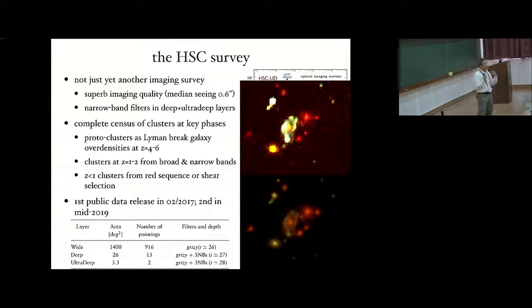So because of all these aspects, we can conduct complete census of clusters at the key phases of their lives, including their infancy, the proto-clusters at redshift 4 to 6, using the Lyman break technique. As well as the forming phase, at redshift 1 to 2, we can use the broad and narrow band filters to study the star formation activity. And into the maturity, at redshift less than 1, as Joe mentioned, we can use the presence of red sequence to identify clusters. A final remark is that the first batch of the HSC data has become public in February 2017. And the next one will occur in May this year. So please stay tuned.